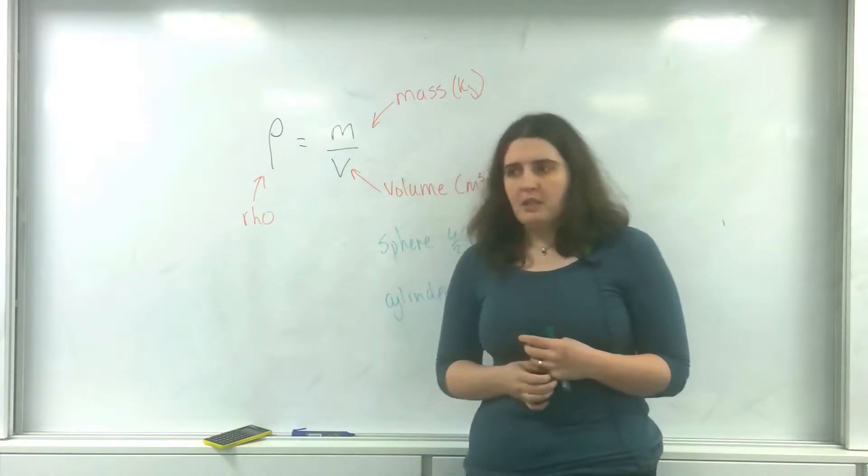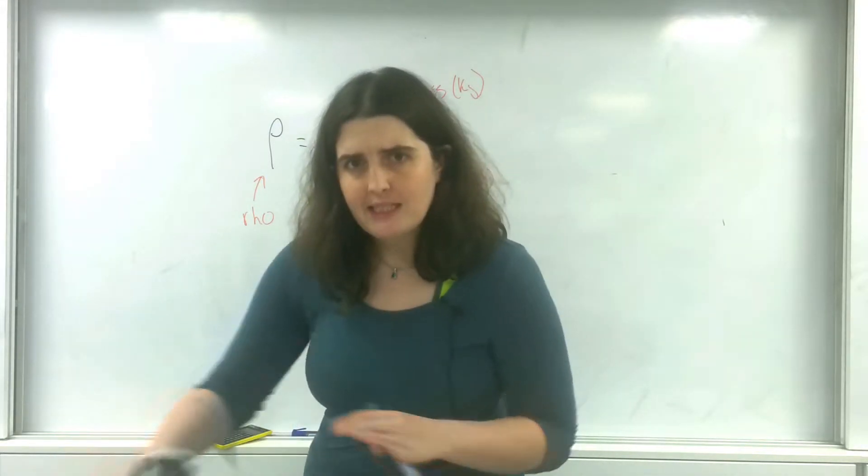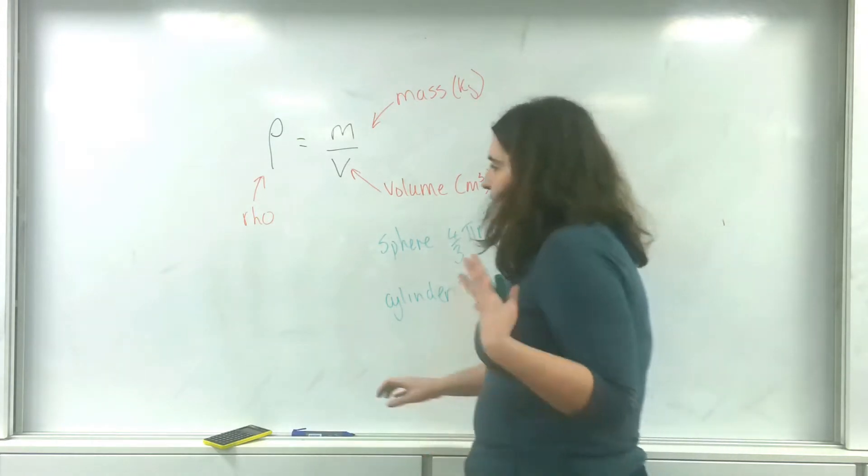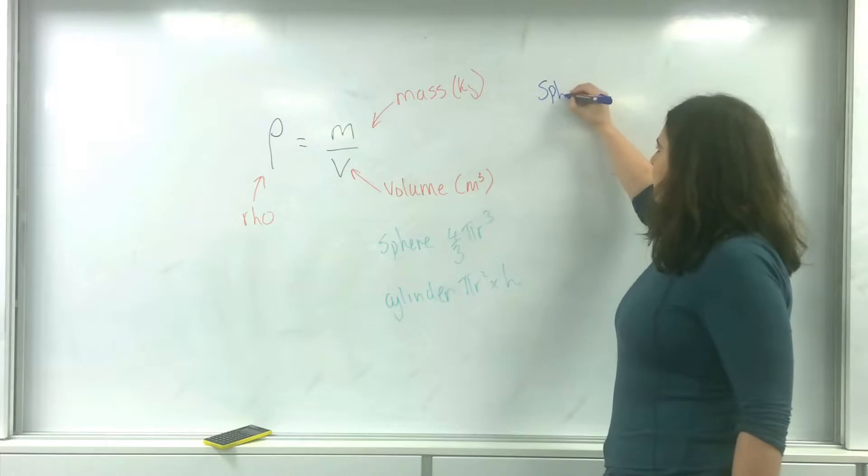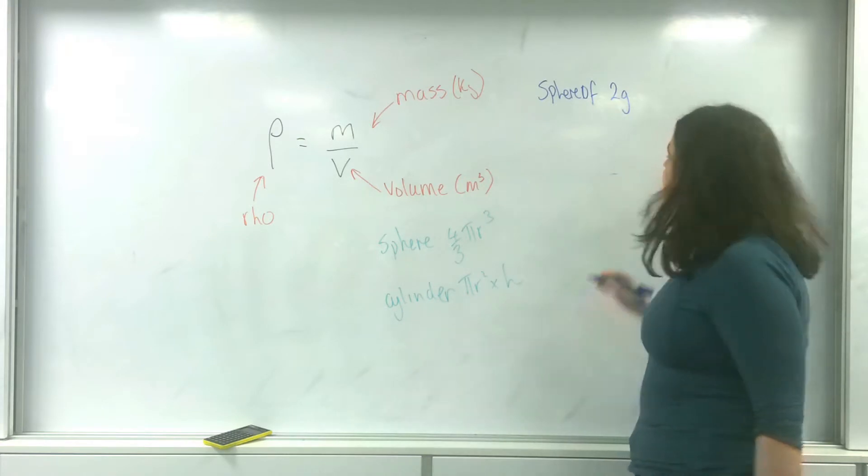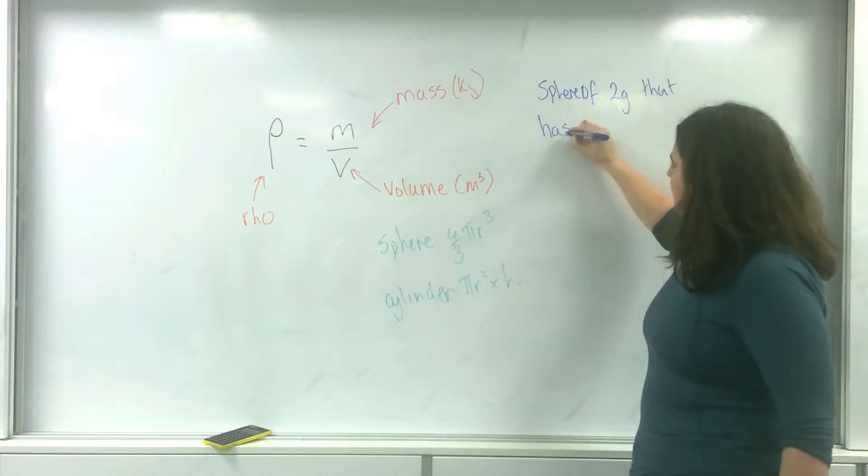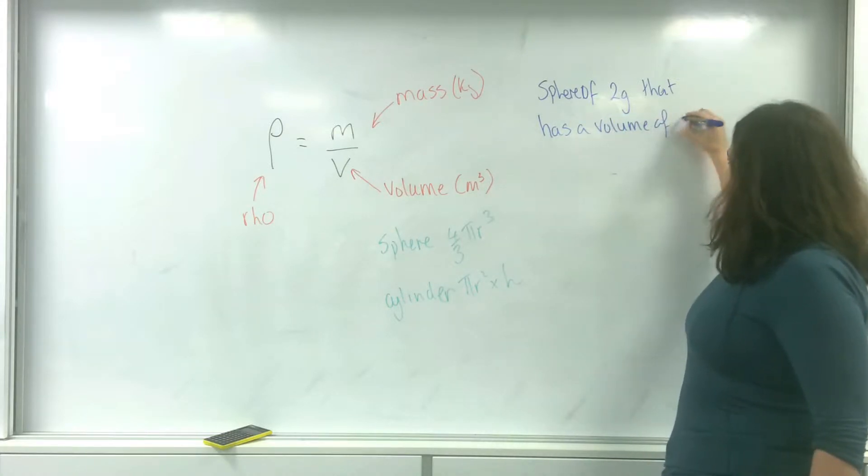The other thing they may do is start giving you things in different units, especially this volume. I'm going to give you an example of that now. Let's say I have a sphere of 2 grams that has a volume of 2 millimeters cubed.